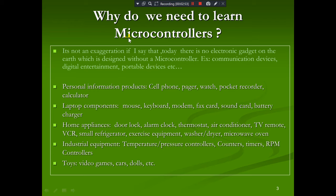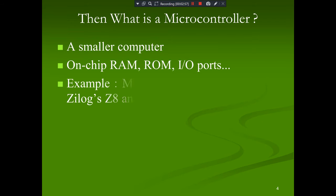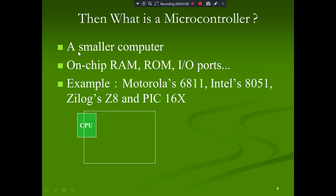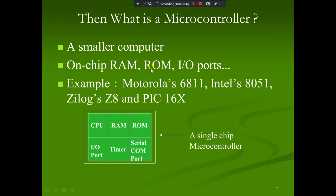So what is a microcontroller? A microcontroller is a small computer. It has on-chip RAM (Random Access Memory), ROM (Read Only Memory), and I/O ports, all embedded on a single chip.